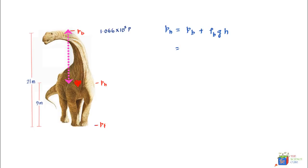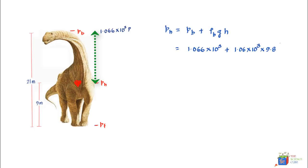The pressure at the brain is 1.066 × 10³ pascals, plus the density of blood which is 1.06 × 10³ kg/m³, times g which is 9.8, times the height — which is 21 minus 9 meters.